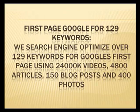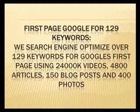We also include the first page of Google for 129 keywords. We search engine optimize over 129 keywords for Google's first page using 24,000 videos, 4,800 articles, 150 blog posts, and 400 photos.